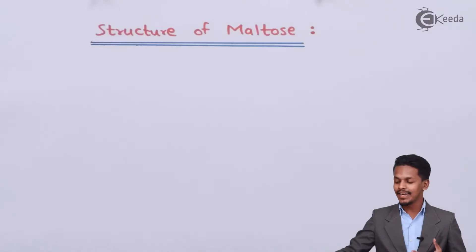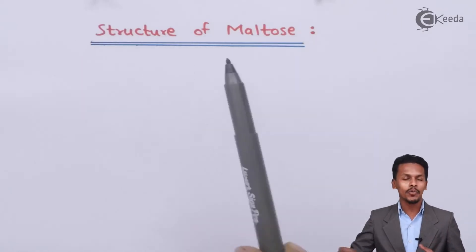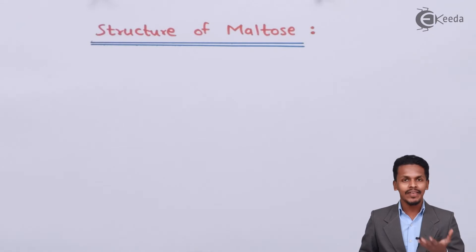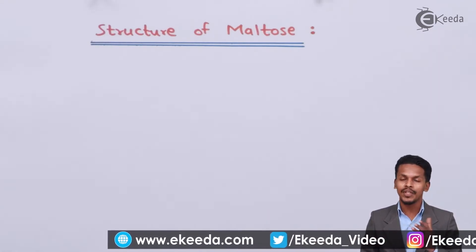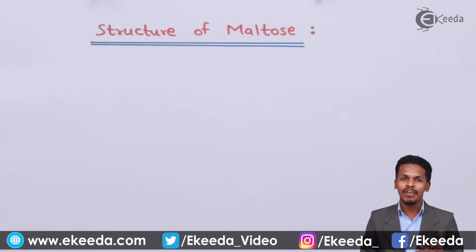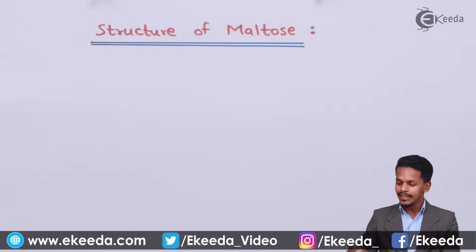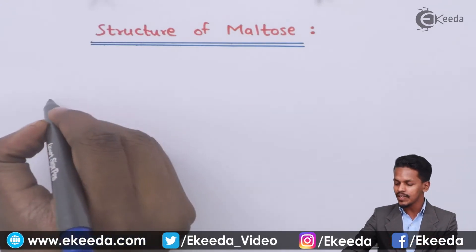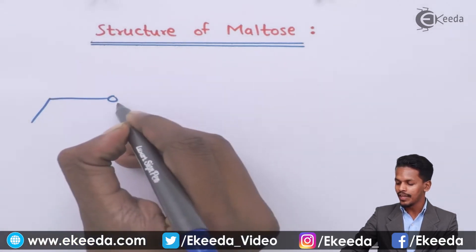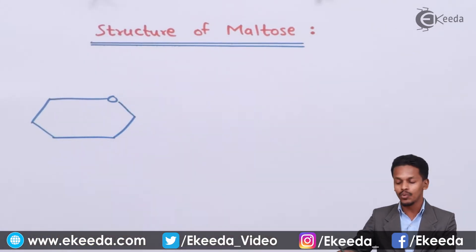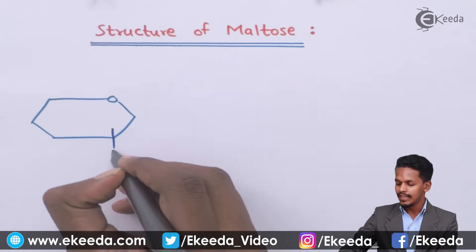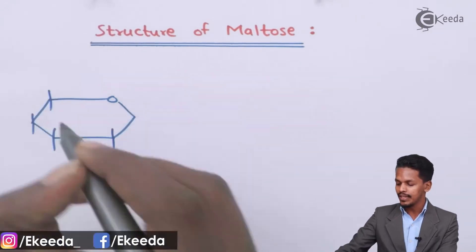Now let us understand the structure of maltose. As we discussed while studying glycosidic linkage, maltose is formed because of the combination of two alpha-D-glucopyranose units. So suppose if we consider the structure of alpha-D-glucopyranose, we will get the following structure.